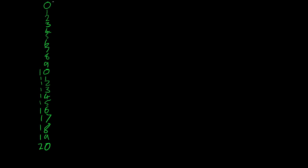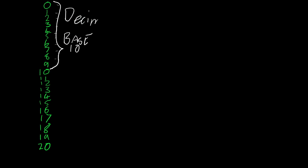If we have a look at that, we can see that the amount of digits we've got to play with is ten — there's ten of them. So this is a base ten numbering system, and we call it decimal. You've got ten values you can play with — that's what we're used to.